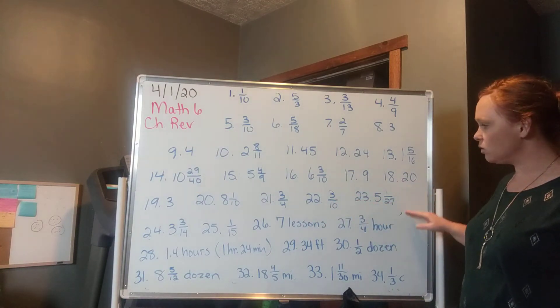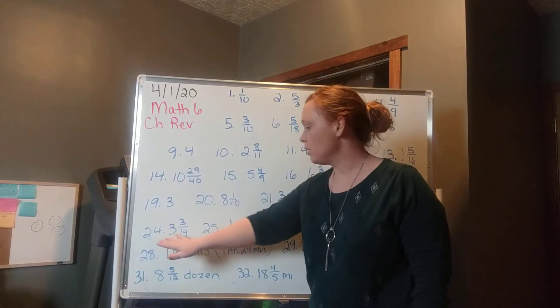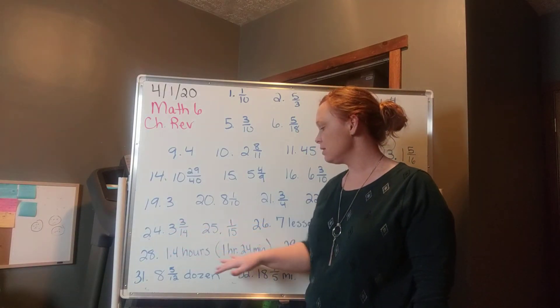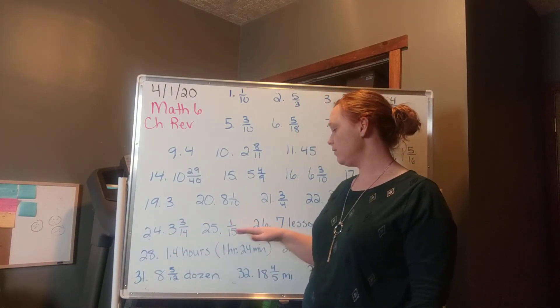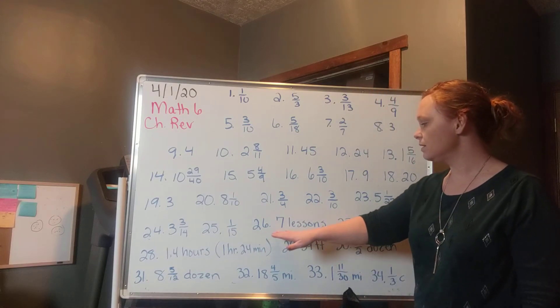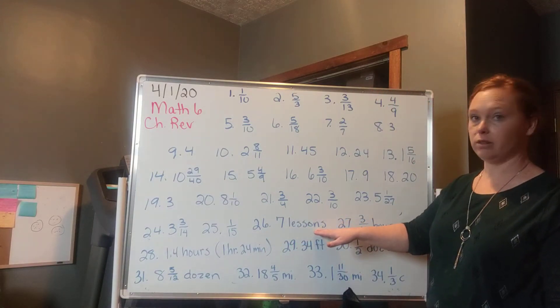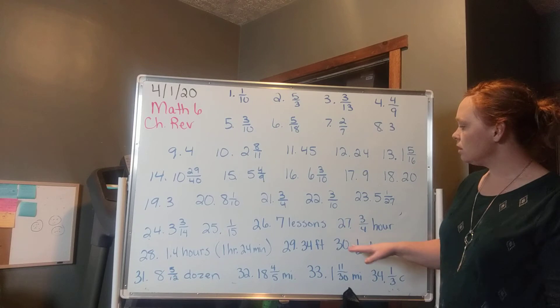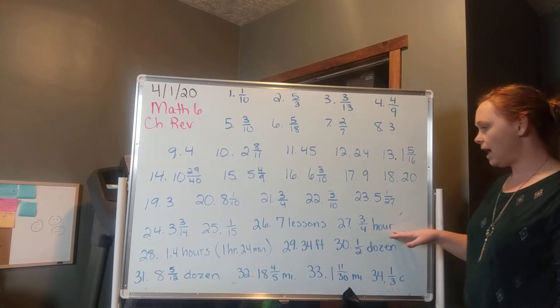Number 23 is 5 and 1 twenty-seventh. Number 24 is 7 lessons. Make sure that you're labeling these word problems. Number 27 is 3 fourths of an hour.